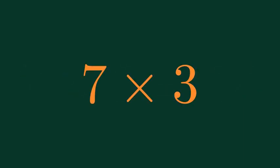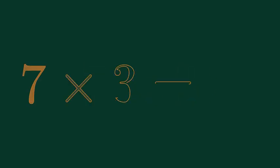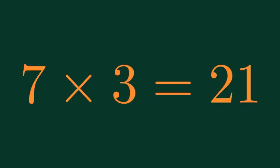What is 7 times 3? 7 times 3 is equal to 21.